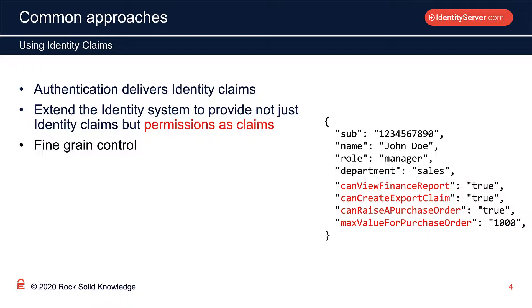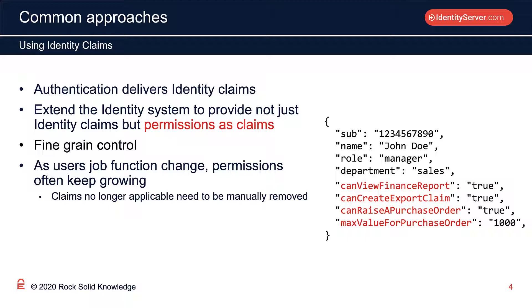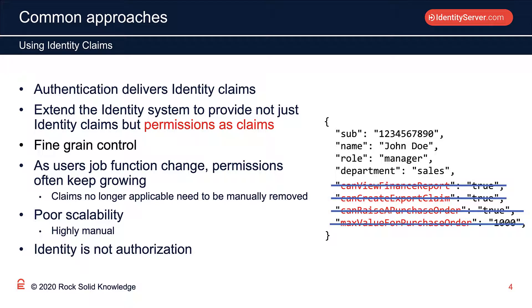However, there are downsides. As a user moves job functions inside the organization, they'll need new permissions. Every time they move job functions, we have to go in and edit their permissions, making sure they've got exactly the right permissions for their current job function. And that's going to be really difficult to audit. There's also poor scalability — we're having to put lots of permissions on individual users. But perhaps more importantly, identity is not authorization. Identity claims need to represent information about the user's identity. Sure, we use that information to drive an authorization decision, but it shouldn't represent the authorization decision itself.